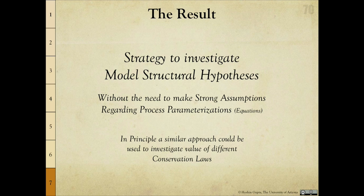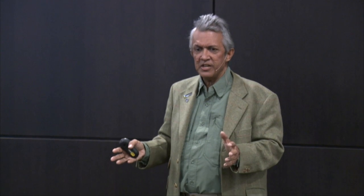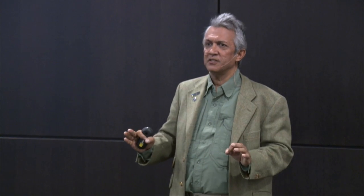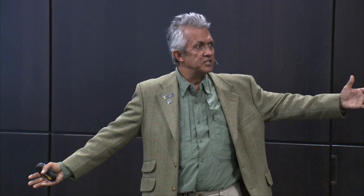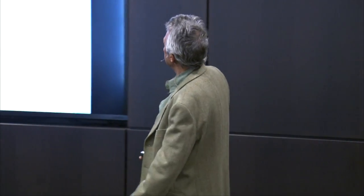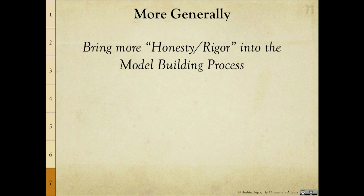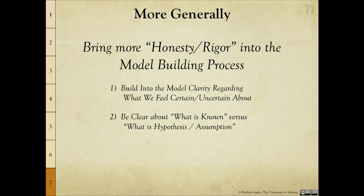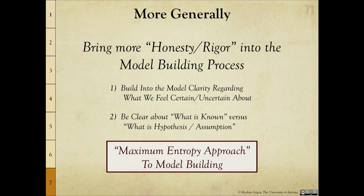The result is hopefully a strategy that enables us to investigate structural hypotheses about systems without making strong assumptions. The basic idea — maximum entropy — means put in only enough information to constrain the system in a way you can feel confident about, and sample everything else randomly from distributions so your data can constrain that uncertainty later. You never over-constrain the system if you do this right. As a scientific process, it builds more honesty and rigor into model building: it builds in clarity about what we feel certain and uncertain about, and makes clear what is known versus what is a hypothesis or assumption.